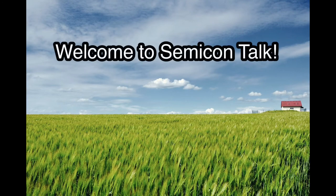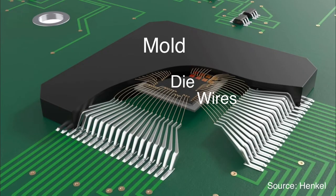Hello everyone, welcome to SemiconTalk. Today, let's talk about the molding process. The molding process is to cover the die and wires with polymer material to protect them from the environment, which can include mechanical damage and chemical damage as well.